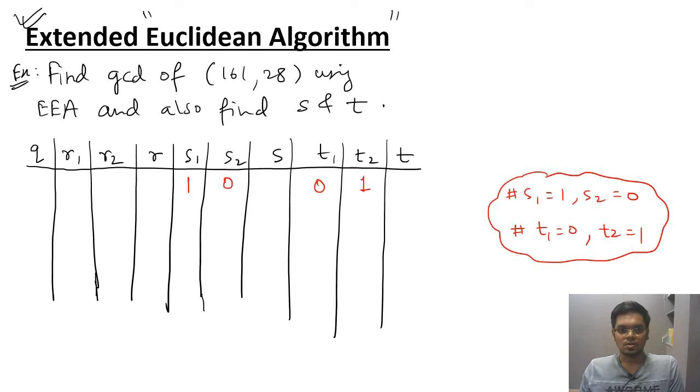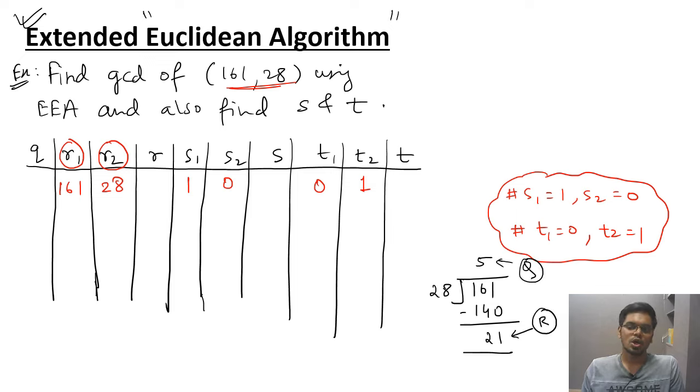Next is fill in the values R1 and R2. R1 is the highest value among the two numbers. The highest value is 161. So R1 is 161 and the remaining part would be R2. 161 divided by 28. So 28 times 5 is 140. Do the subtraction. The answer is 21. Numerator part is the coefficient part. Denominator part is remainder part. Coefficient is 5. Remainder is 21.